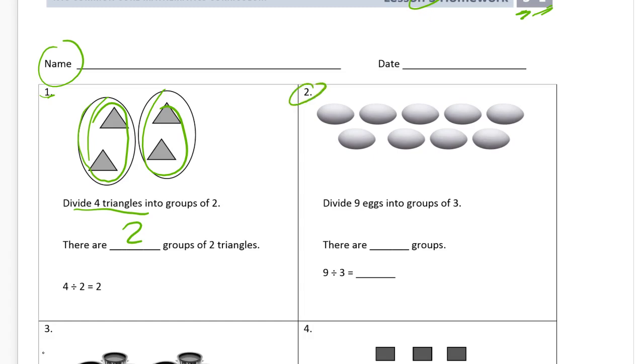Now we're on to counting eggs. We've got nine eggs here. We're going to divide them into groups of three. So there's three, three, and three. There are three groups. Nine divided by groups of three is three groups.